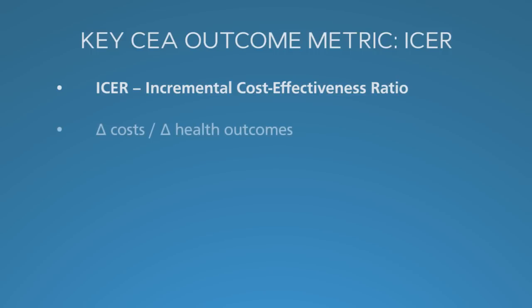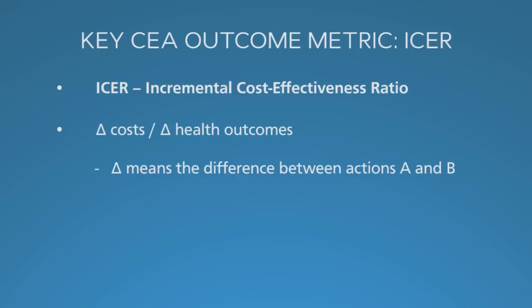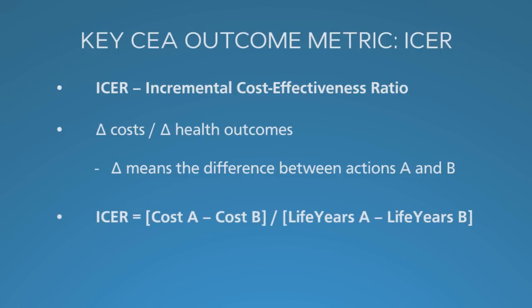The ICER is the difference in cost — represented as delta cost — divided by the difference in health outcomes. The differences are between two possible actions, here called A and B. Thus, the Incremental Cost-Effectiveness Ratio is the cost of option A minus the cost of option B, all divided by the difference in life years. As I said, everything is comparative.